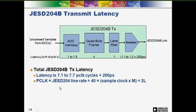Since I mentioned peak clock cycles, the peak clock is just our digital processing clock for a JSD, and it is always 1/40th of the rate of the serializer clock or the line rate on the JSD interface.